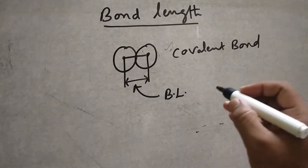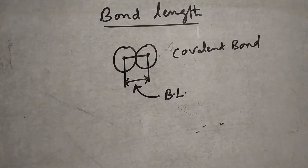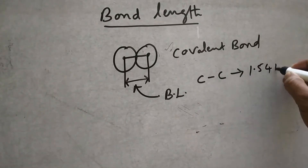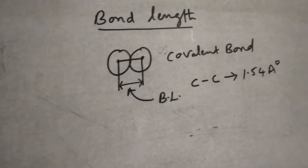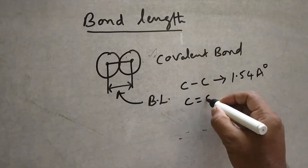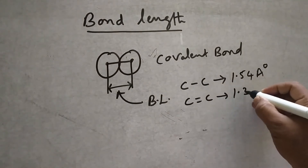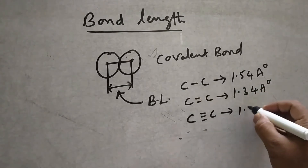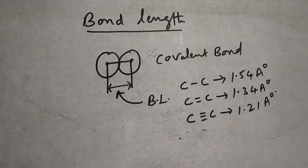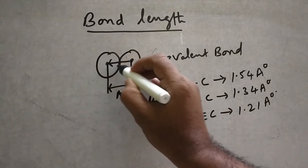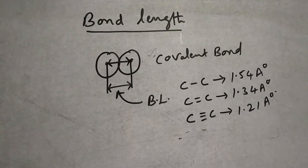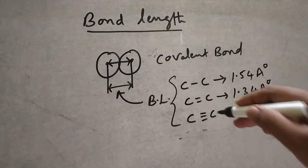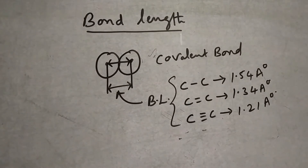Bond length. For competitive type exams: carbon-carbon single bond length is 1.54 angstroms. Carbon-to-carbon double bond is 1.34 angstroms. Carbon-to-carbon triple bond is 1.21 angstroms. This is the bond length. You can arrange bond lengths in increasing or decreasing order.